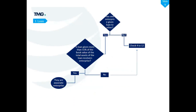The loan criteria states: if one enterprise has given a loan to another, and the loan exceeds 51% of the book value of the total assets of the loan-receiving enterprise, then the giver and receiver would be deemed associate enterprises. This criteria comes with a threshold limit of 51%, which must be evaluated.